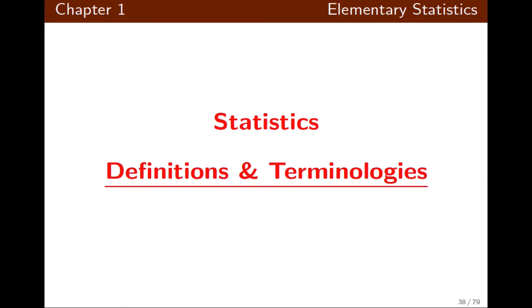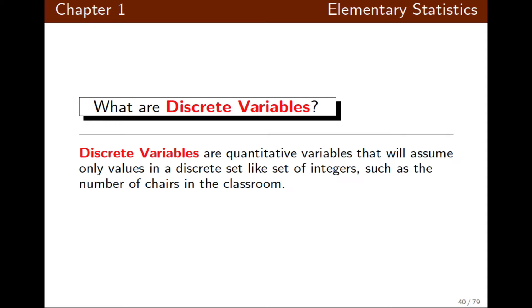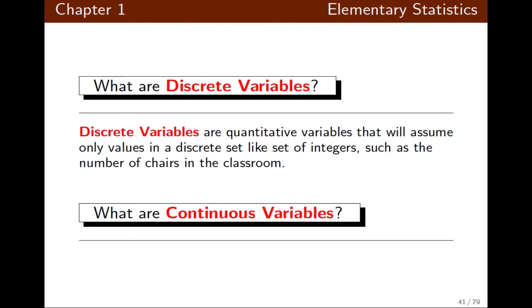Let's continue our discussions about introduction to statistics, definitions and terminologies. Now we're going to talk more about variables. Discrete variables are quantitative variables that can assume whole numbers — integers — like the number of chairs in the classroom or the number of people at a party.